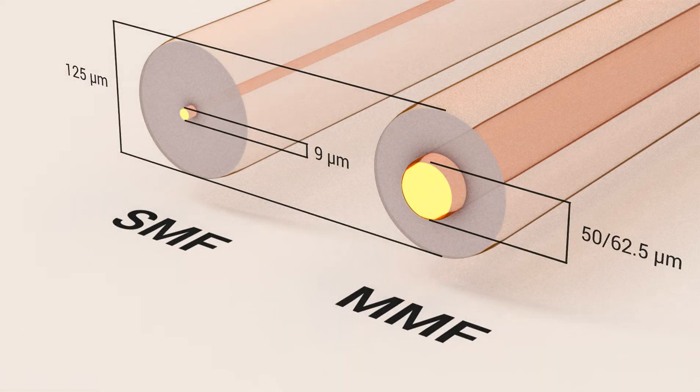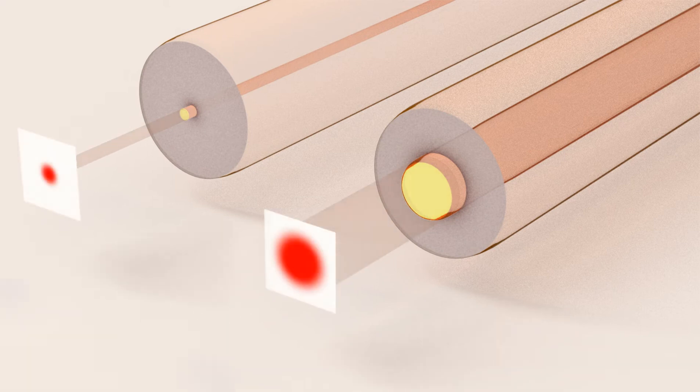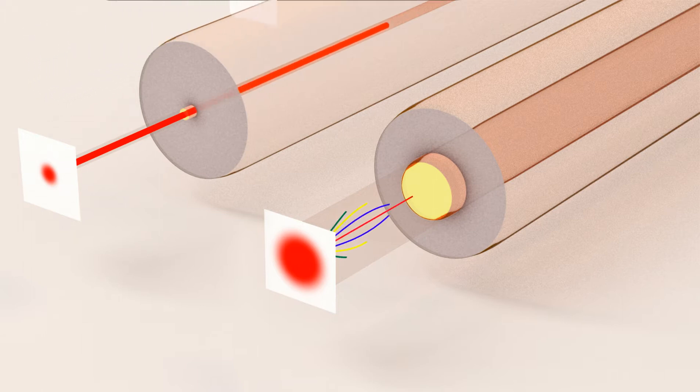The main difference between single-mode and multi-mode fibers is their core size. Core diameter of single-mode fibers is smaller, forcing light to propagate over a single path.